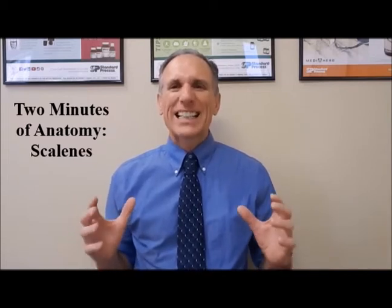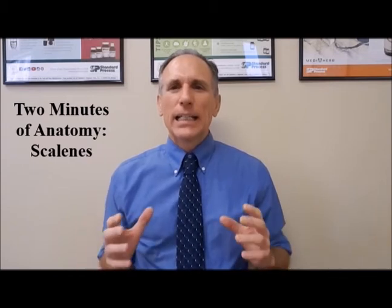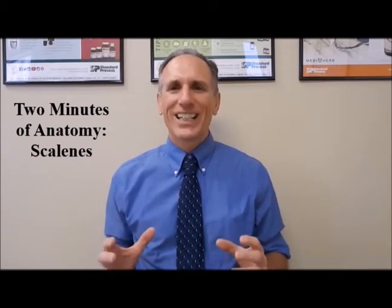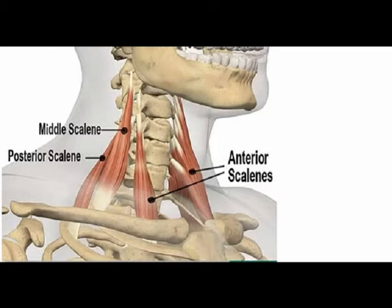There are three scalenes on each side: the anterior, the middle, and the posterior scalenes. The anterior scalenes are also known as the scalenus anterior. They originate on the anterior tubercle of the transverse process of cervical vertebrae C3 through C6, and they insert on the scalene tubercle on the inner border of the first rib.